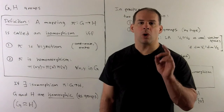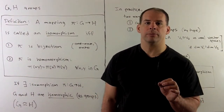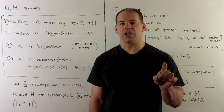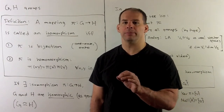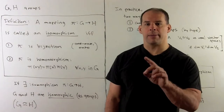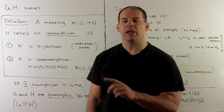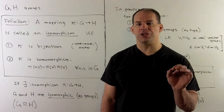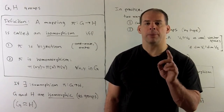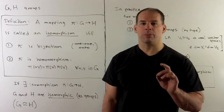Recall the question that we're working on: when are two groups equal? Essentially, a group is just a set with a multiplication. So we'd want our groups to have the same cardinality, so they're equal sets, and we would want the multiplications to correspond. So that gives us the definition of an isomorphism.